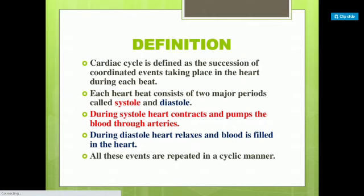In the systolic phase, the heart is contracting, and in the diastolic phase, the heart is relaxing. During systole, the heart contracts and pumps blood through the arteries — the pulmonary artery and the aorta. During diastole, the heart relaxes and blood is filled in the heart. All these events are repeated in a cyclic manner, and one complete cycle takes 0.8 seconds. The normal heart rate in a healthy human being is 72 times per minute.